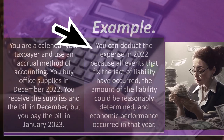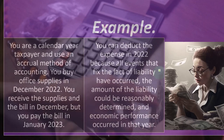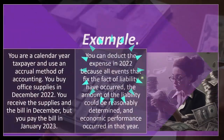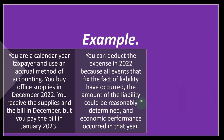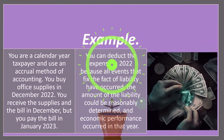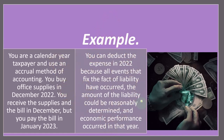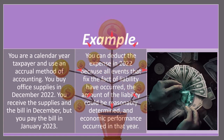Let's think about those three criteria: all events fixing the fact of liability have occurred, meaning you know what the liability is and it has occurred — you've received the supplies you purchased. The amount of the liability could be reasonably determined — you probably already know how much you're going to owe because that's in the contract of the purchase. And economic performance has occurred in that year; in other words, you've got the supplies already, even if you have not yet paid for them, therefore the supplier has completed their side of the job.